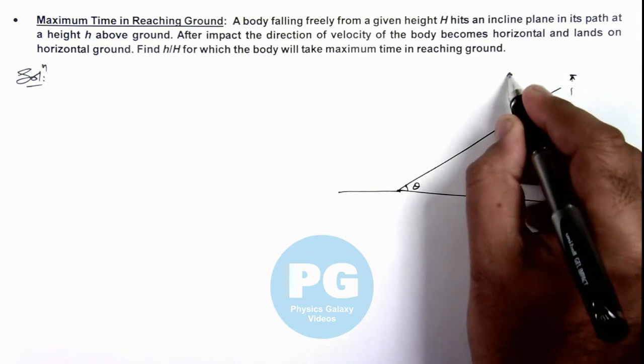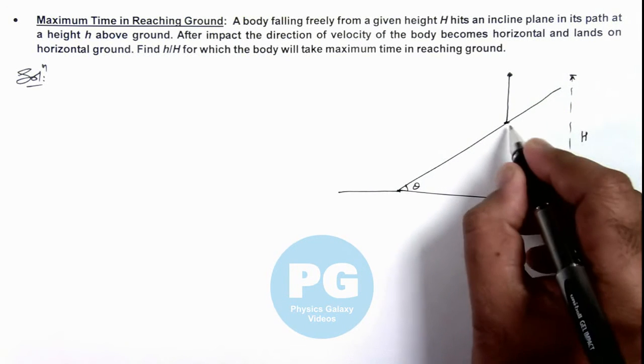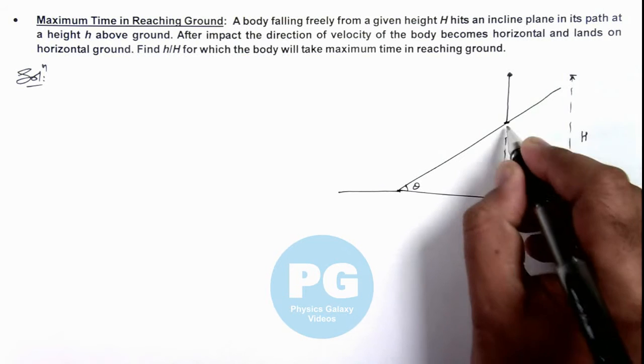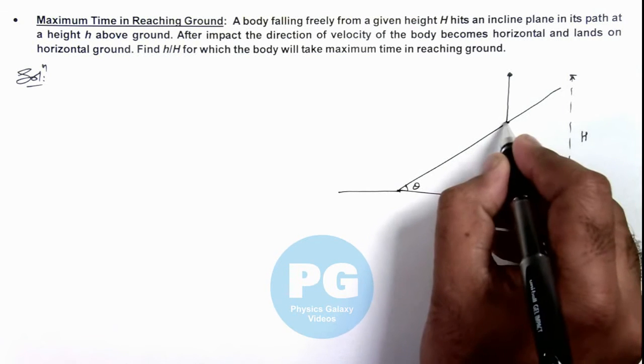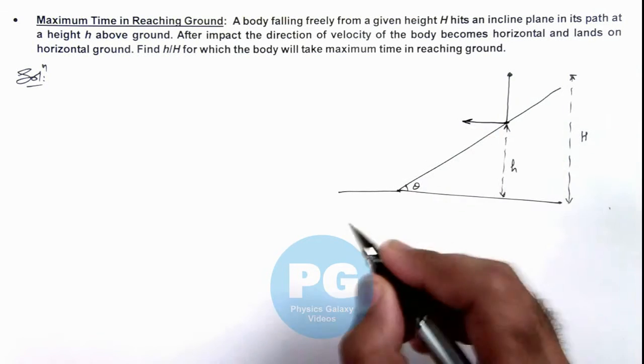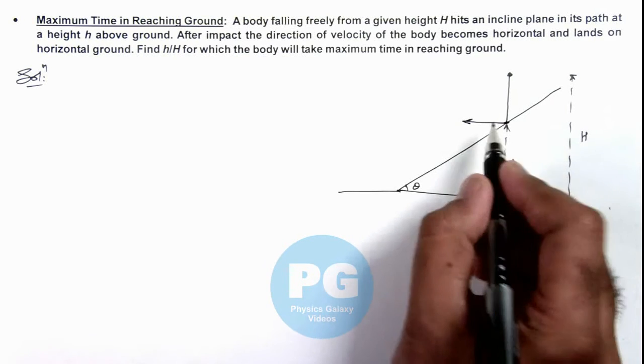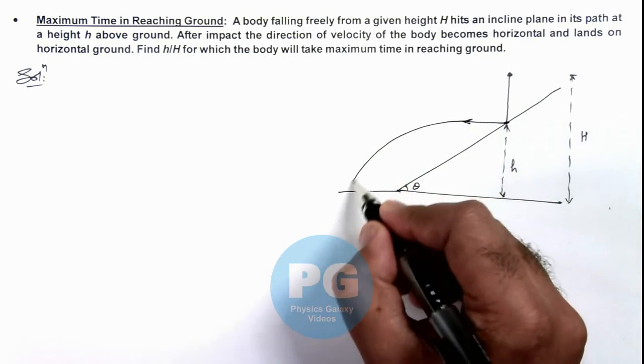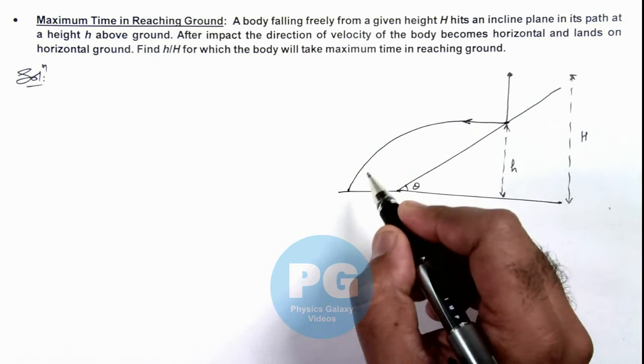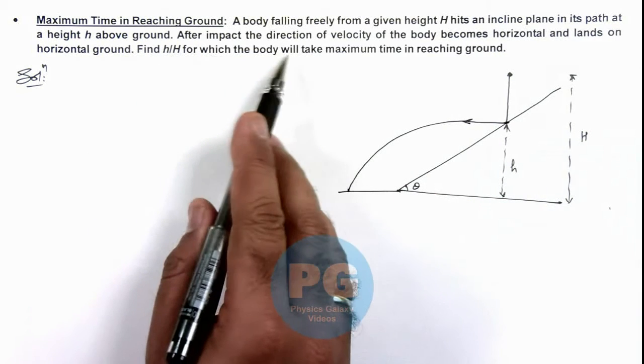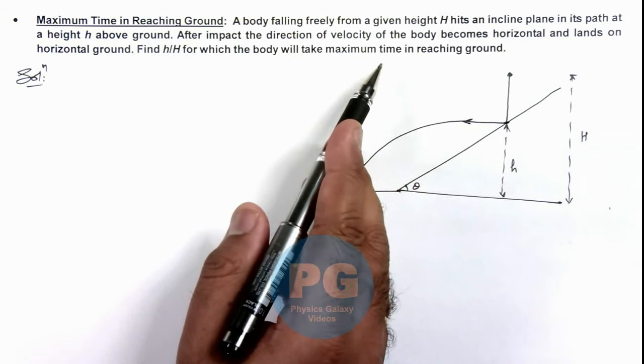It falls and in its path strikes the incline plane at a height small h. After collision its velocity becomes horizontal. In this situation it finally lands on ground. We are required to find h by H for which the body will take maximum time in reaching the ground.